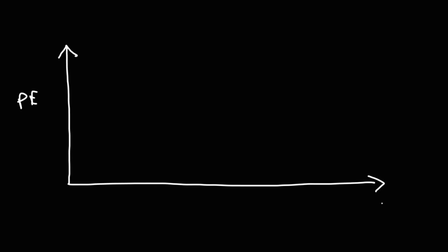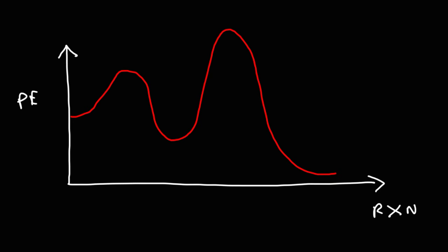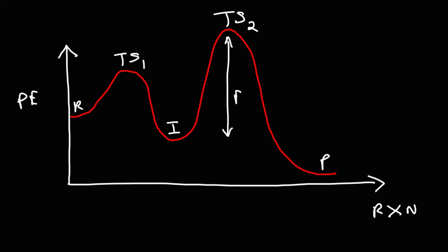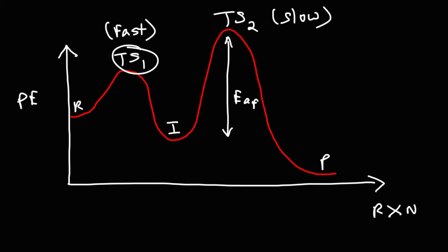Let's analyze another potential energy diagram — this time a multi-step energy diagram. Here we have the reactants, the products, the first transition state, the second transition state, and the intermediate. Which step is the slow step? Notice that TS2 greatly exceeds TS1, so the energy of activation is very high for the second step. Therefore, the second step is the slow step in this chemical reaction. The first step is the fast step because the transition state is lower in energy in the first step than in the second step.